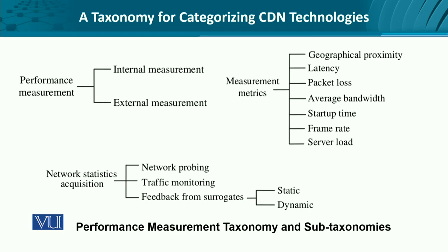For performance measurement, the taxonomy starts with internal measurements versus external measurements. Internal measurements are relatively simple, with many tools that have no geographical dependencies. For external measurements, proper mechanisms are needed since they go beyond the administrative domain into another autonomous system with altogether different administrative control. Measurement metrics include proximity, latency, packet loss, bandwidth requirement, bootstrap time, frame rate for video, and overall application-layer load on a single server. Statistics can be obtained at the network level by active probing, promiscuous traffic monitoring, or active feedback such as agent-based reporting like SNMP from the surrogates.